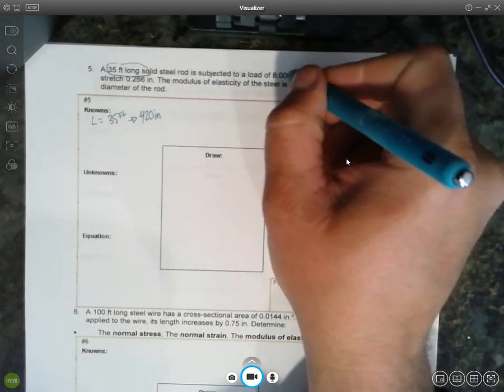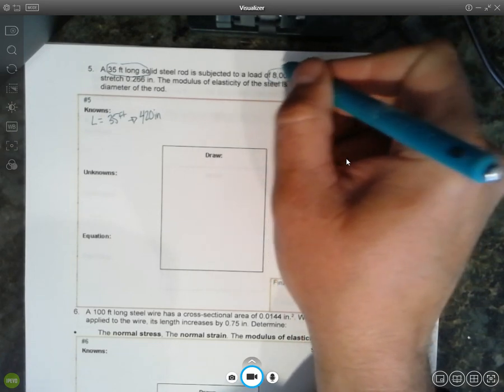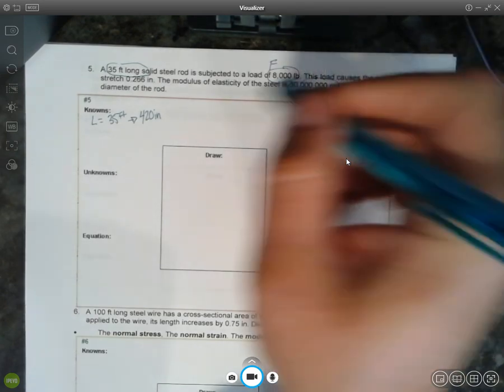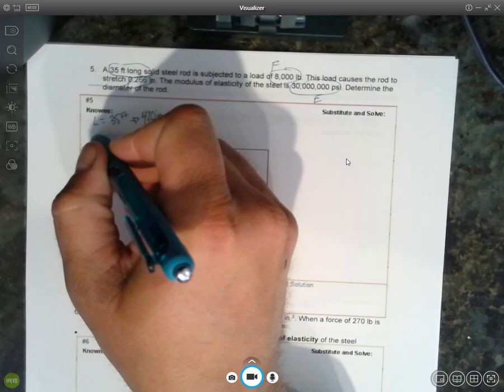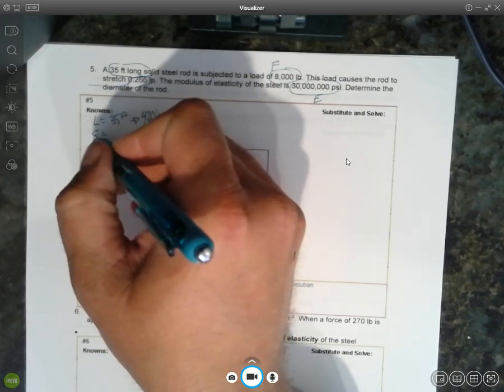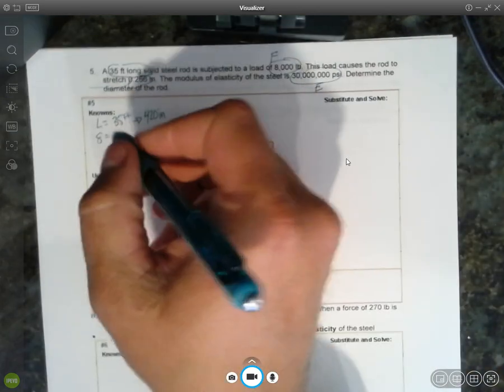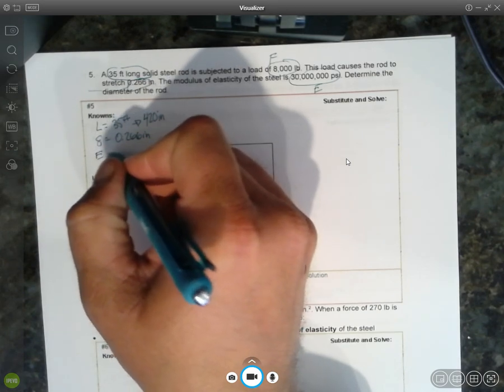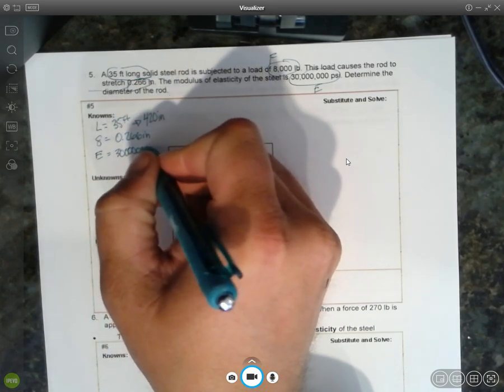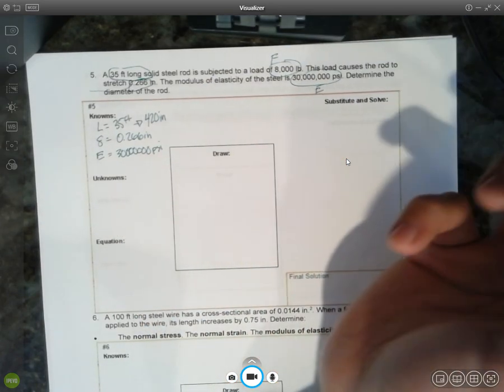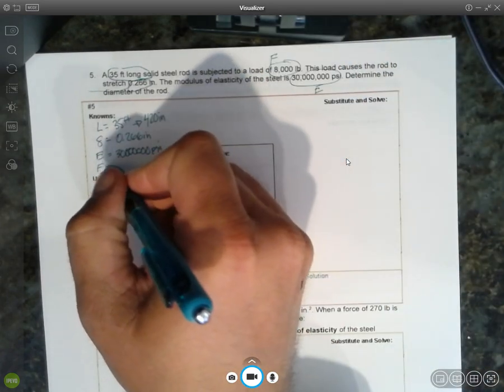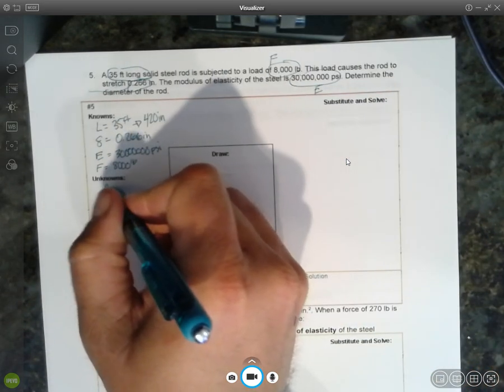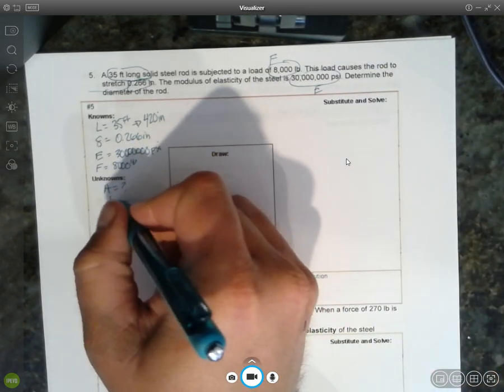8,000 pounds, that's my load. So we'll call that the F. And 30,000 is my modulus of elasticity. And then here they gave me stretch. So stretch is actually kind of what looks like an S that gets completed, almost an eight but not quite. And that is 0.266 inches. So elasticity is 30 million PSI. And the force is 8,000 pounds. What we don't know is both the area and then once we have area, the diameter.